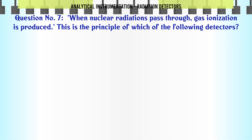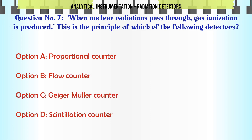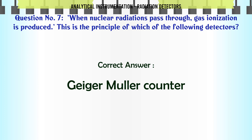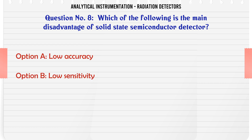When nuclear radiations pass through gas, ionization is produced. This is the principle of which of the following detectors? A. Proportional counter. B. Flow counter. C. Geiger-Müller Counter. D. Scintillation counter. The correct answer is Geiger-Müller Counter.